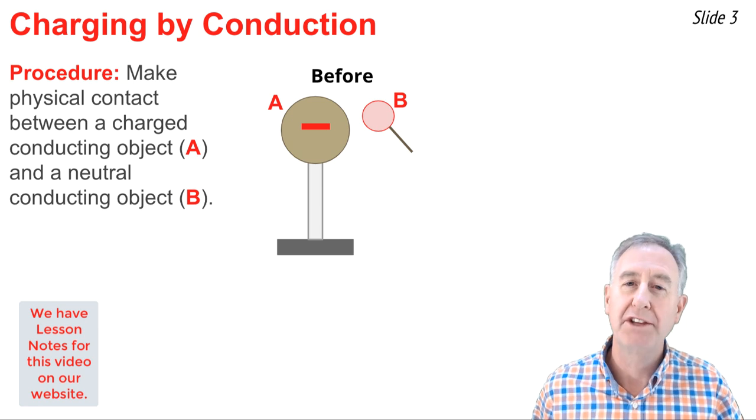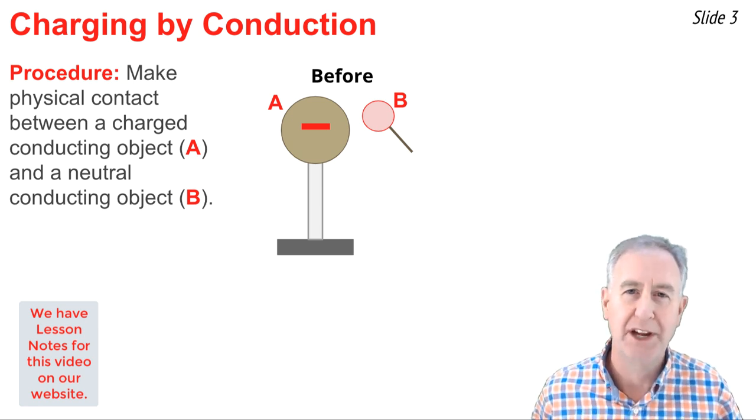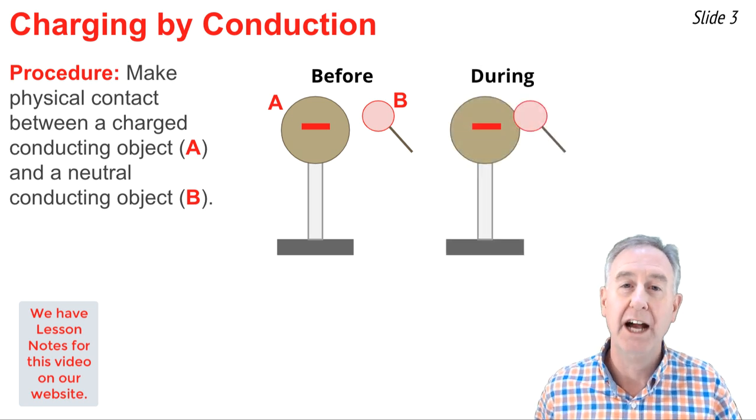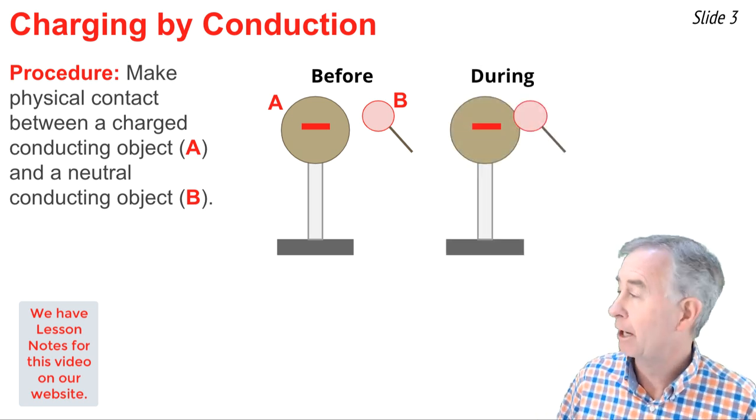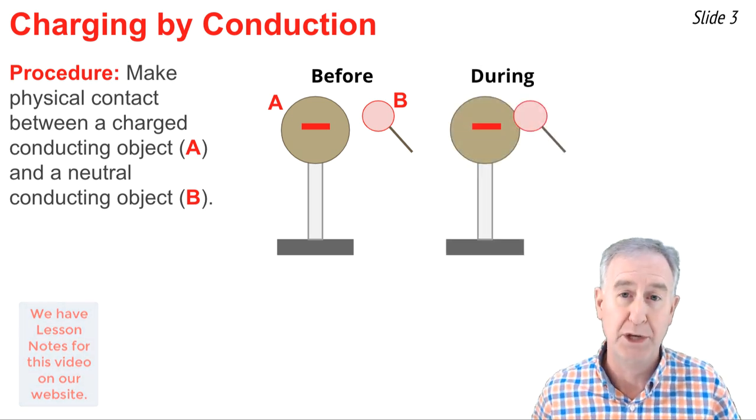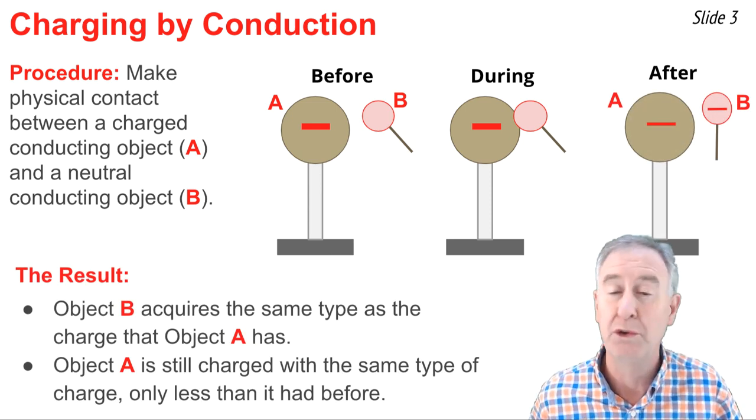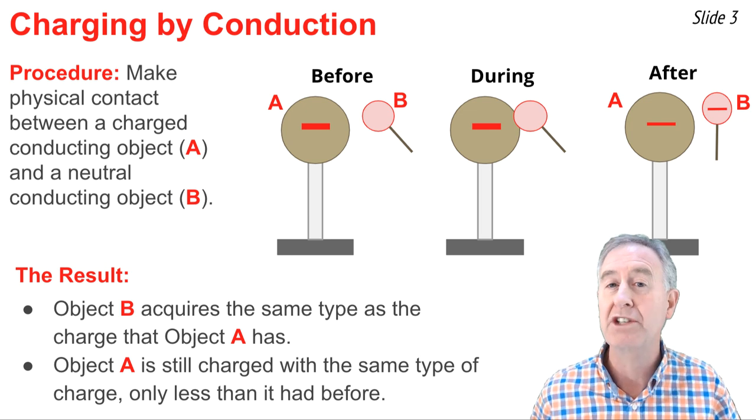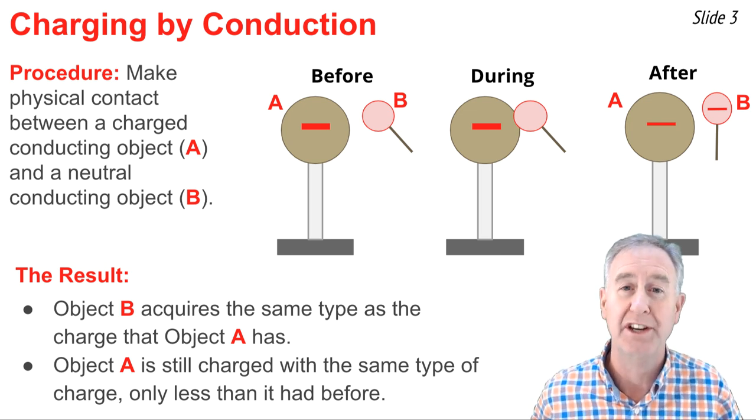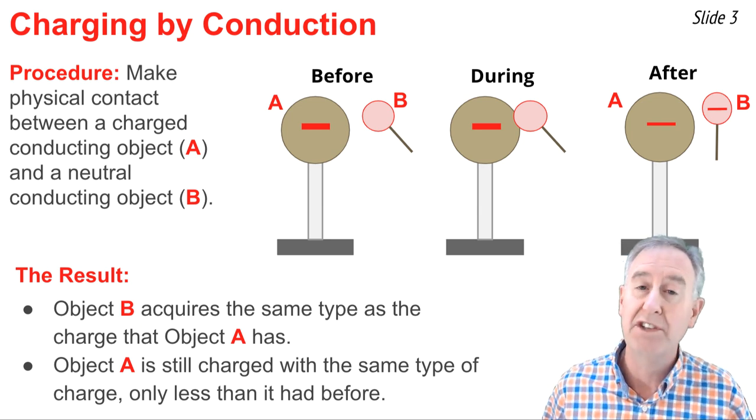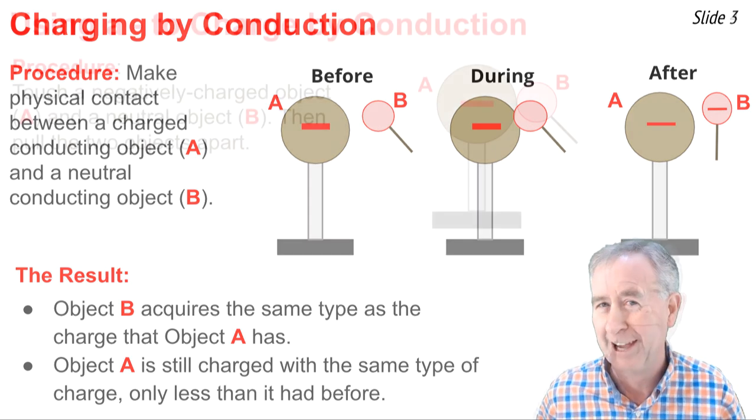Charging by conduction is one of several methods used to charge a neutral object. This particular method involves bringing a charge-conducting object to and making contact with a neutral-conducting object. The result of this process is object B, the original neutral object, now acquires the same type of charge that object A has. And object A remains charged, only has less of the same type of charge that it originally had.